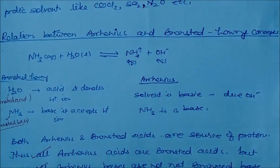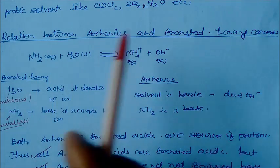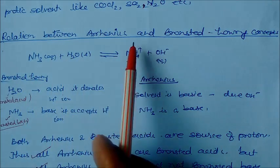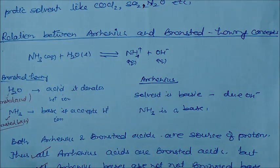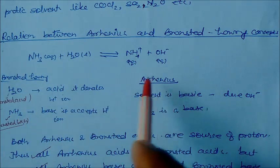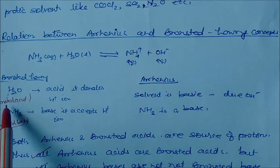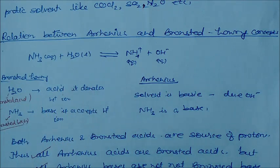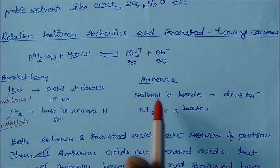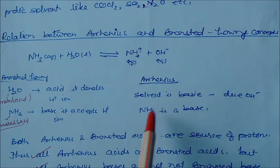Now let us see the relationship between Arrhenius (RNS) and Bronsted-Lowry concepts. Taking the example of ammonia plus water giving ammonium ion plus OH−: in Bronsted-Lowry theory, water acts as a Bronsted acid because it donates H+ ion, while ammonia acts as a Bronsted base because it accepts a proton. But in Arrhenius theory, the solution is basic due to the presence of OH−, so ammonia is a base — but there is no explanation for the role of H2O.